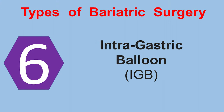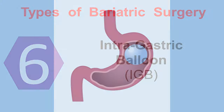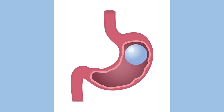The intragastric balloon consists of a soft saline-filled balloon that promotes a feeling of satiety and restriction. It is advocated for use as a bridge to a more definitive surgical procedure and is also approved for patients with class 1 obesity with a BMI of 30 to 34.9. The balloon is typically inserted endoscopically and filled with 400 to 700 mL of normal saline for a maximum of six months, beyond which the leak rate increases significantly. A deflated balloon can migrate from the stomach to the intestine and cause bowel obstruction; removal requires a second endoscopic procedure.